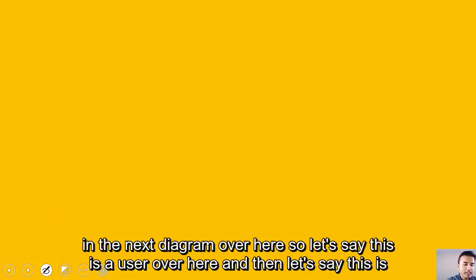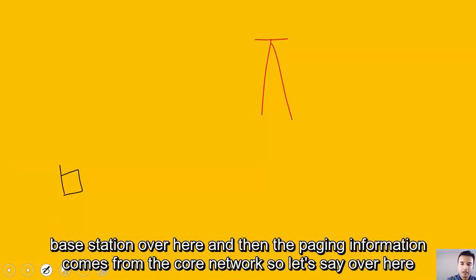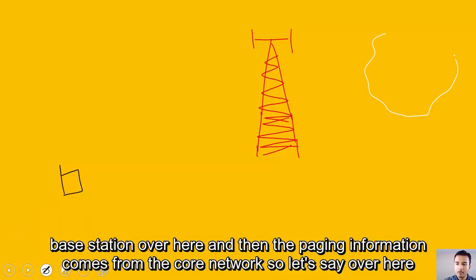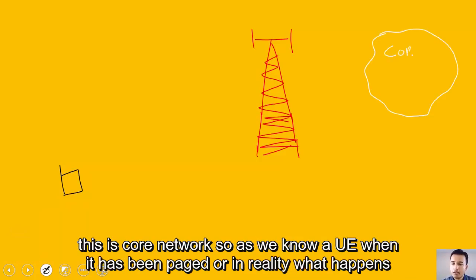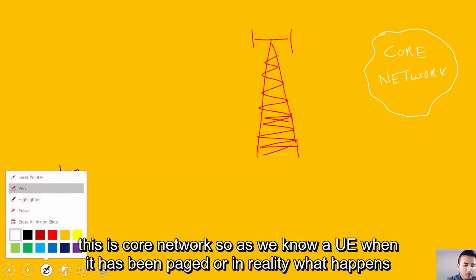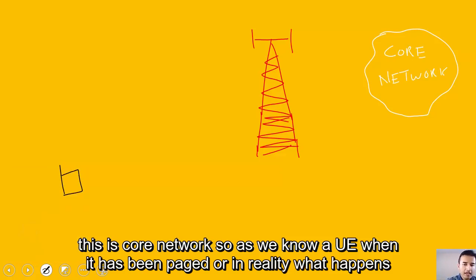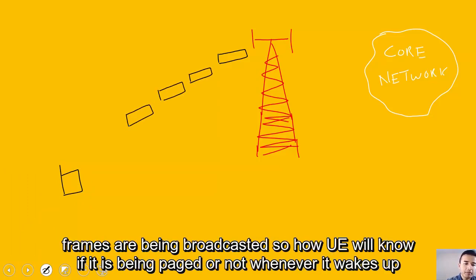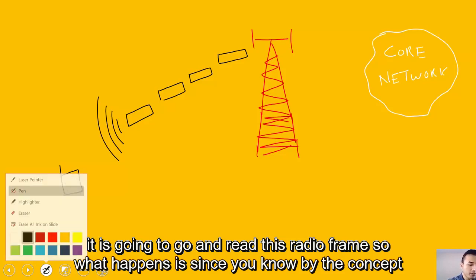Let's say this is a user here, and this is base station here, and the paging information comes from the core network. As we know, a UE when it has been paged, in reality what happens is this eNodeB is continuously broadcasting these radio frames. When these radio frames are being broadcasted, how will you know if it is being paged or not? Whenever it wakes up, it is going to read these radio frames.